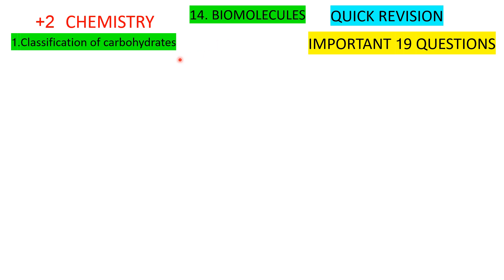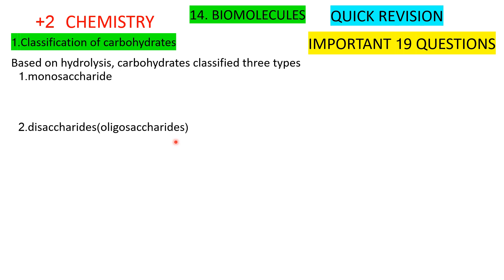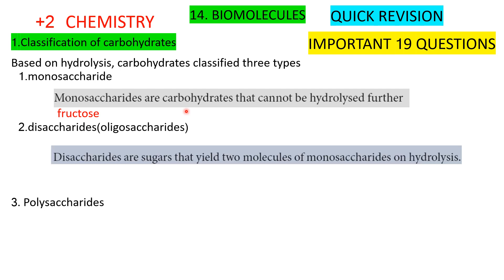First one: classification of carbohydrates. Based on hydrolysis, carbohydrates are classified into three types. First, monosaccharides. Second, disaccharides or oligosaccharides. Third, polysaccharides. Monosaccharides are the carbohydrates that cannot be hydrolyzed further. Examples: glucose, fructose.